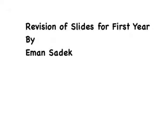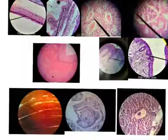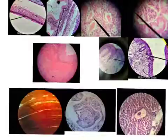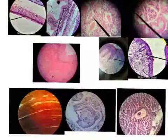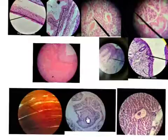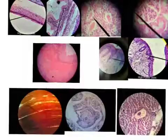This is a revision of slides for the first year, regarding the high power slides. There are 10 in number: simple squamous epithelium, simple cuboidal epithelium, simple columnar epithelium, pseudostratified columnar ciliated with goblet cell, non-keratinized stratified squamous, keratinized stratified squamous, transitional epithelium — these seven are for epithelium. Then we have three types of nerve endings: the muscle spindle, the Pacinian corpuscle, and the motor end plate with silver stain.